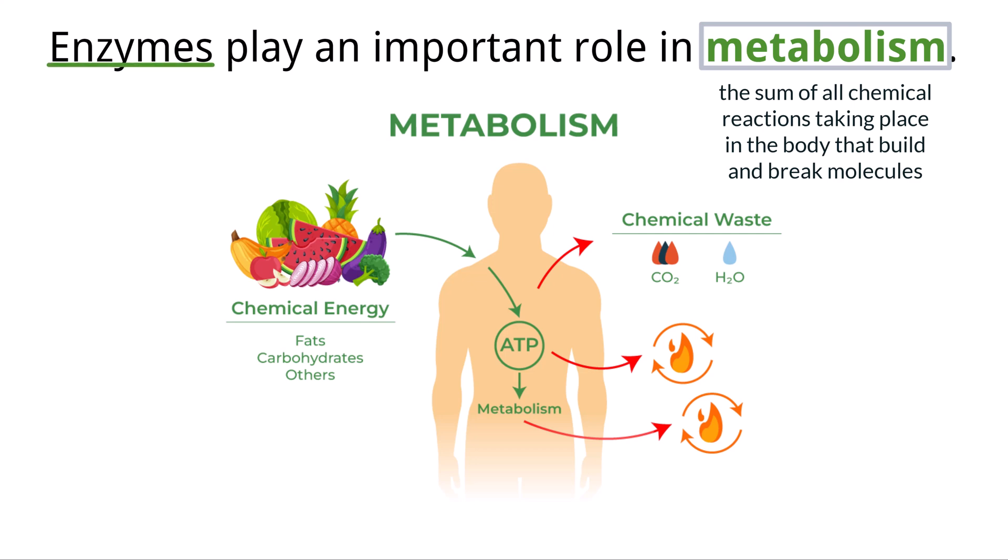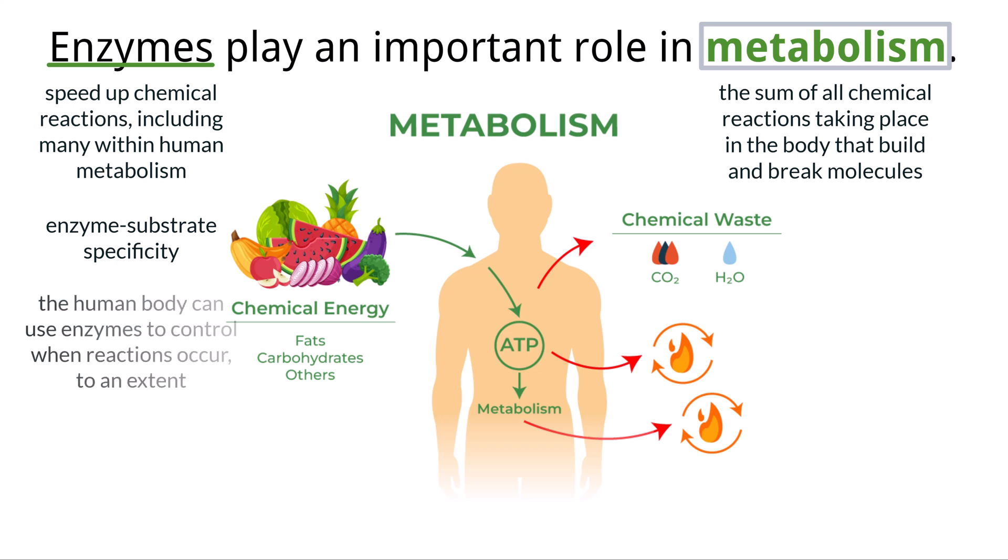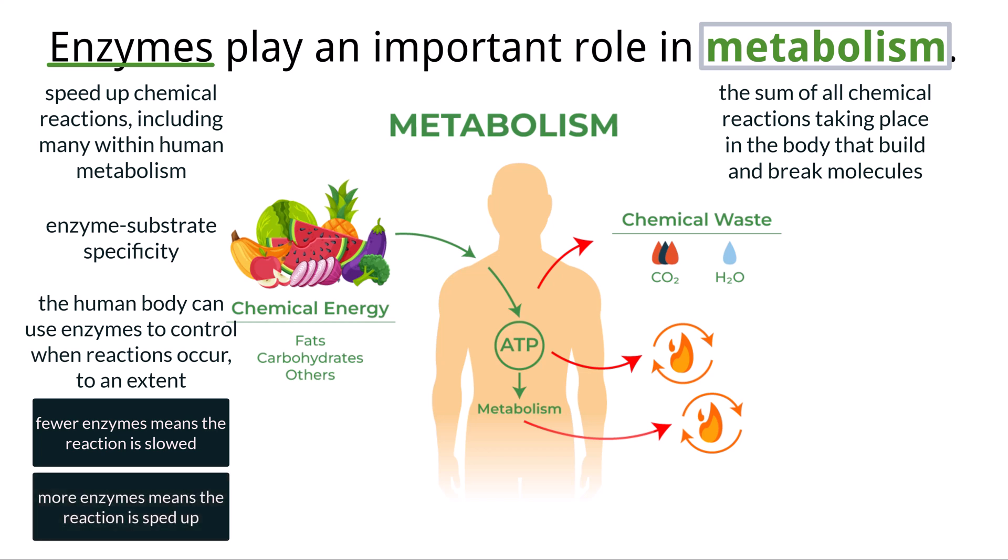This is important because enzymes make reactions easier by lowering the activation energy required for substrates to become products. In addition to reducing activation energy, enzymes play an important role in metabolism because of their enzyme-substrate specificity. Because only certain enzymes can assist certain reactions, the body can control, to an extent, when these reactions occur. This can happen in a few ways, one of which is as simple as creating an enzyme at a certain time. If the cell does not need a certain reaction to speed up, it simply will not transcribe and translate the instructions for that enzyme to be made. And if there is no enzyme, then it can't function. On the other hand, if the cell does need to speed up a particular reaction, it can create more of those specific enzymes that will ensure the reaction takes place. We'll talk about this role of metabolism in more detail over the next few slides.